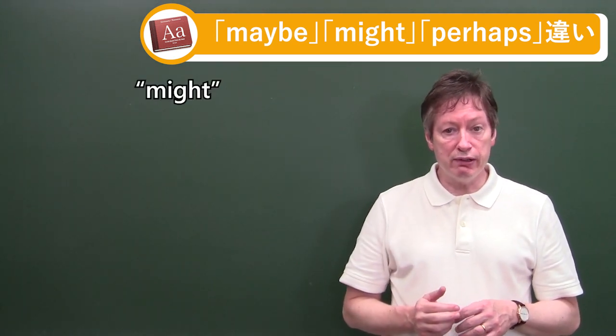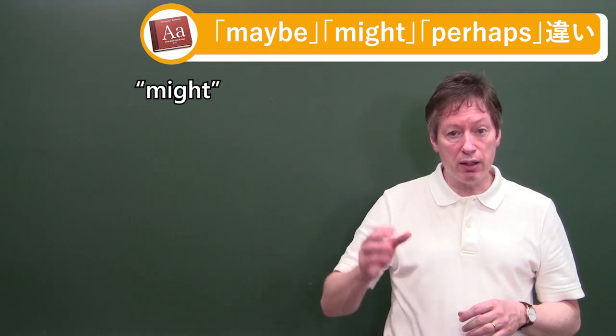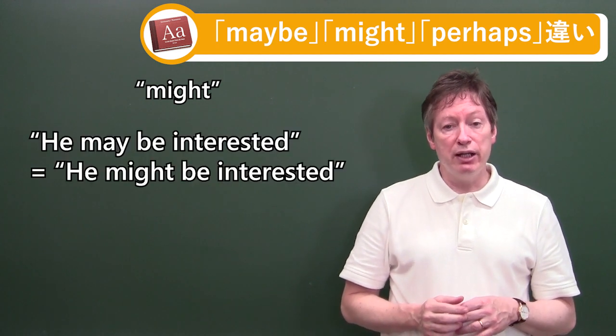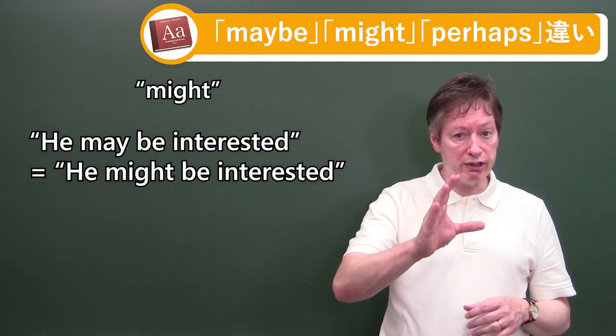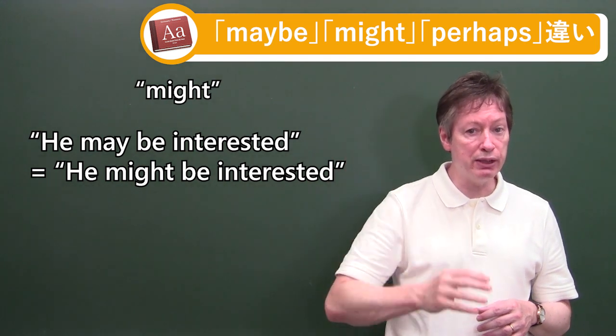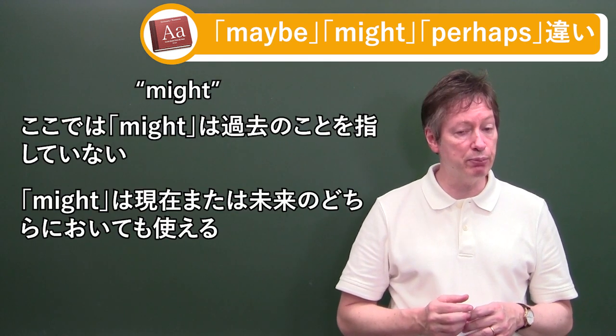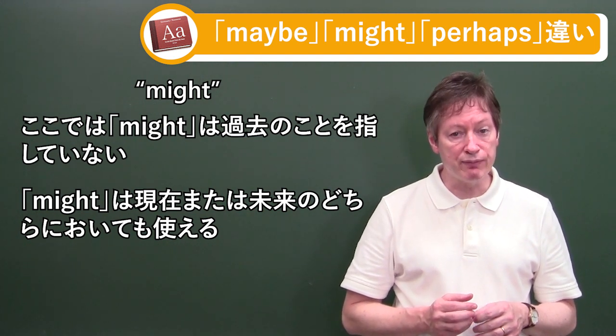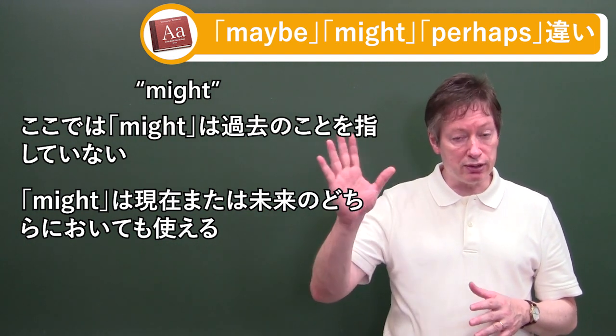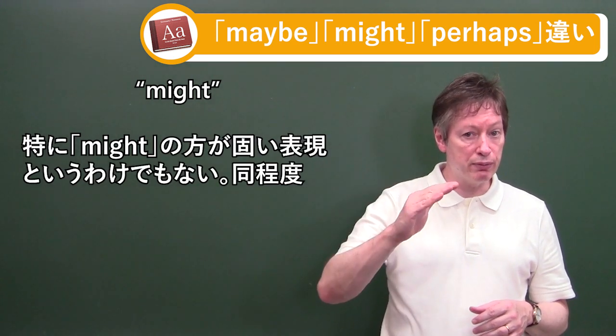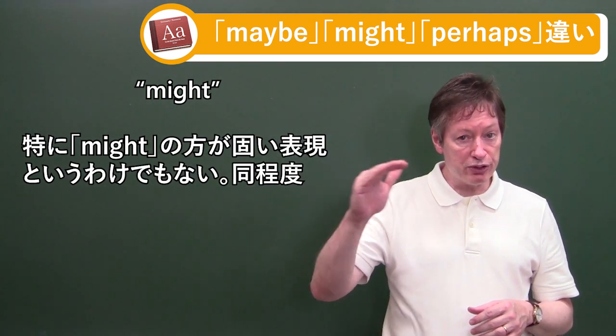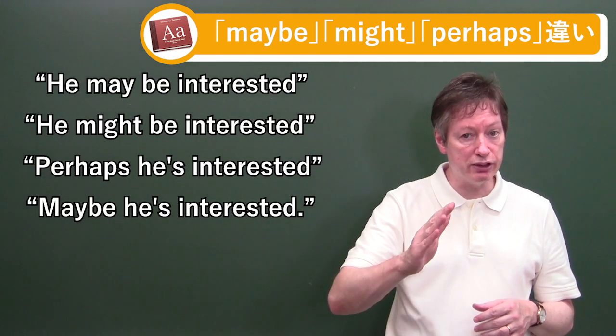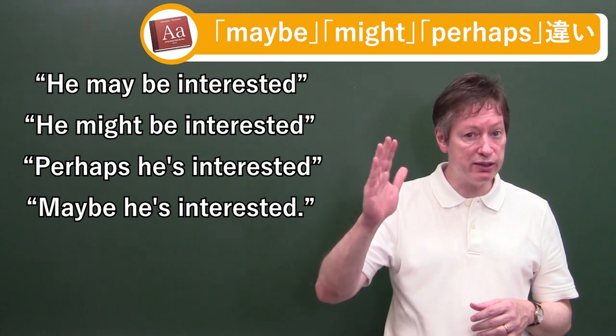Now I want to put in there as well might. Now might is the past tense of may, but it's not only used in the past tense. So he may be interested. Equally fine is he might be interested. Might here does not refer to the past at all. Might refers to the present or the future. But it's just equally fine. Now I would not say that might is more formal than may. Pretty much they're on equal terms. So he may be interested. He might be interested. Perhaps he's interested.